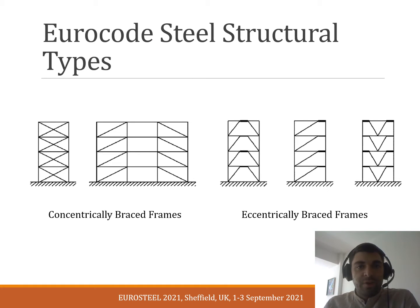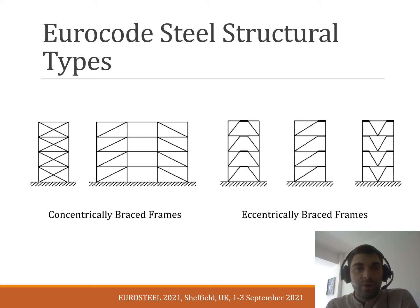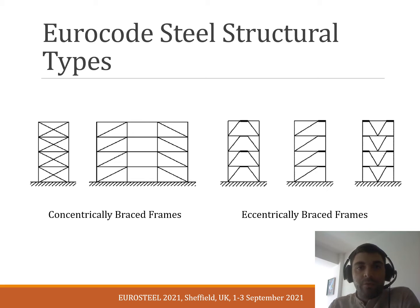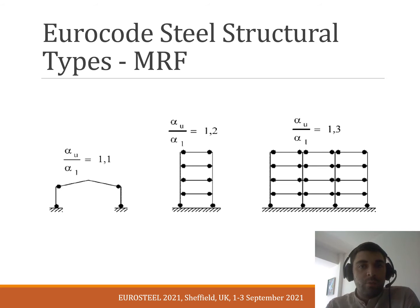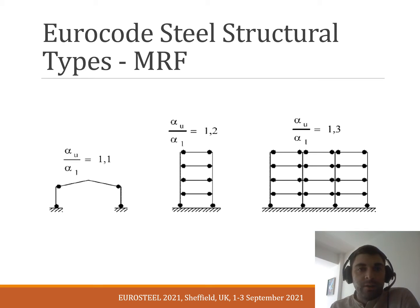The moment-resisting frames are one of the three main structural steel typologies used for seismic design of steel frames, with the other two being the concentrically braced frames and eccentrically braced frames. These two structural types involve braces as structural elements which reduce the effect of any lateral loading and allow for plastic hinges to form in the braces and special parts called links. The moment-resisting frames are characterized as the most ductile structural type, possessing a large number of possible dissipative zones, given that plastic hinges can develop both in the beams and the columns.